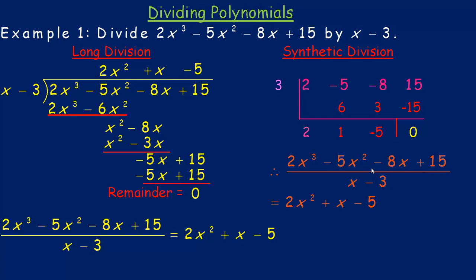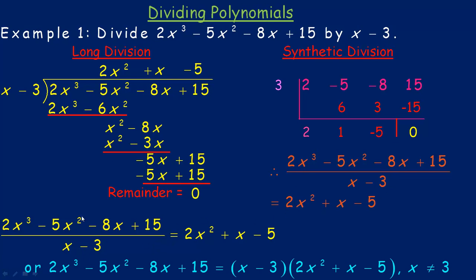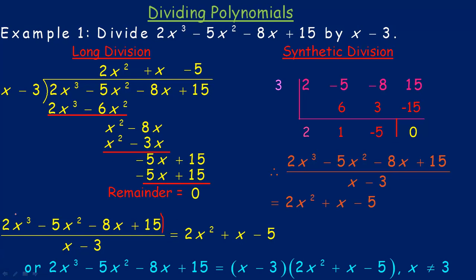We divided the cubic polynomial 2x cubed minus 5x squared minus 8x plus 15 by x minus 3 and got 2x squared plus 1x minus 5. Another way to write the division statement: if you multiply both sides by x minus 3, the divisor divides out on one side and you're left with the cubic polynomial equaling the product of the trinomial and the binomial. And of course the restriction is x cannot equal 3.